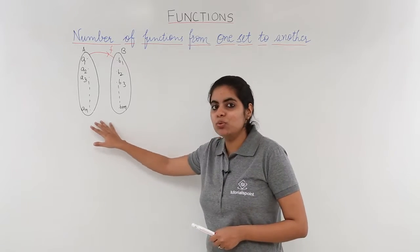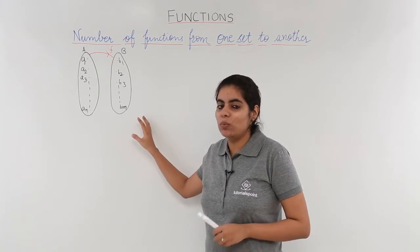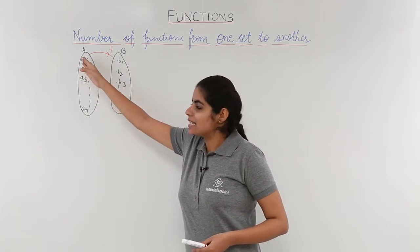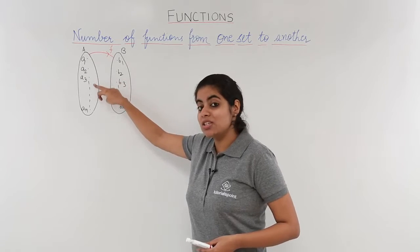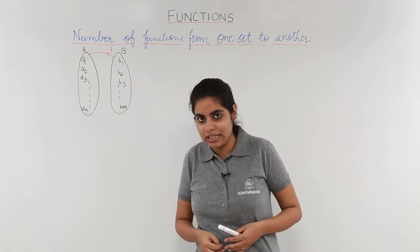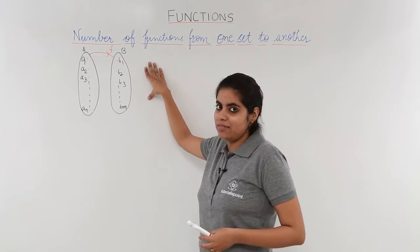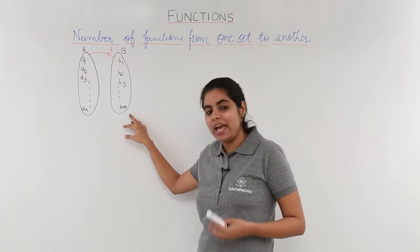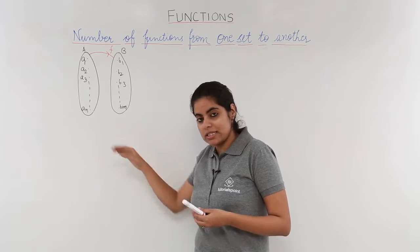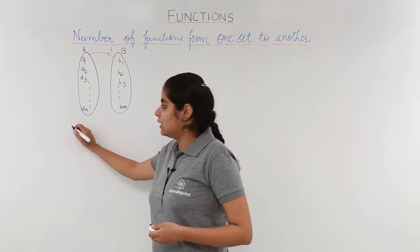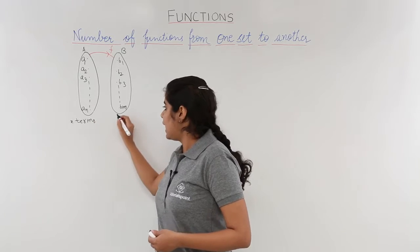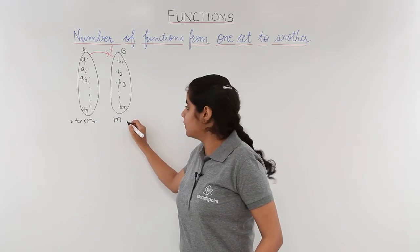Suppose we have two sets A and B which are not empty and have some elements. A has elements as A1, A2, A3 and so on up till AN, and B has elements as B1, B2, B3 and so on till BM. So here I can say that N terms are there and here I can say that M terms are there.